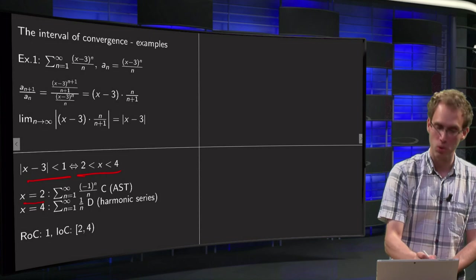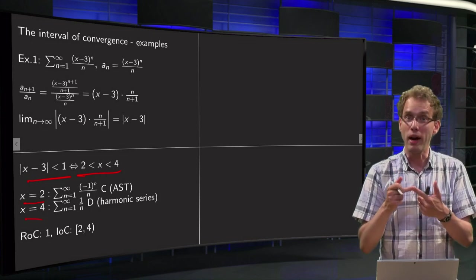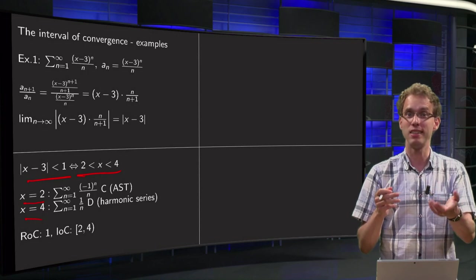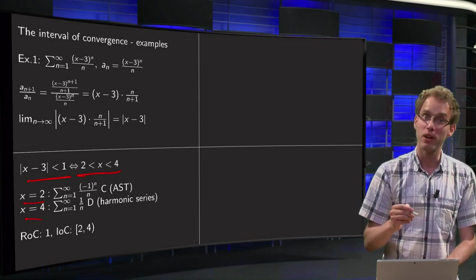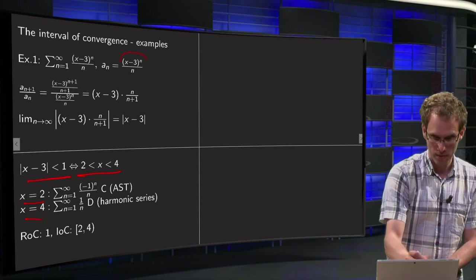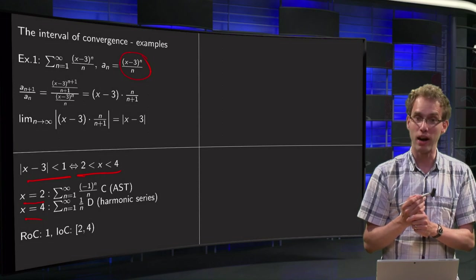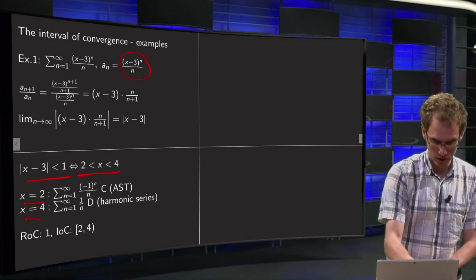Either x equals 2 or x equals 4. But then we just need to check two x's, which means we can plug in the x's and see what happens. If you plug in x=2 over here in the a_n, you get (2-3)^n equals (-1)^n divided by n, this is the series over here.